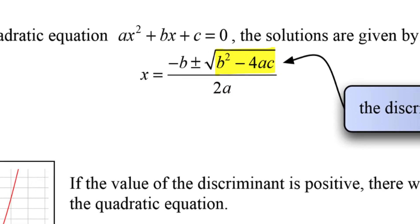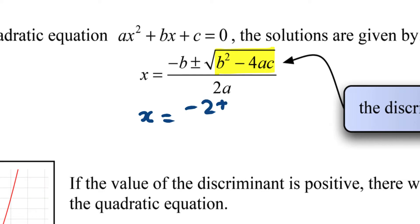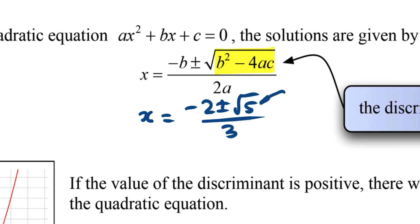Let's think about this. If we're solving a quadratic equation and we get the solution negative 2 plus or minus the square root of 5 over 3, for example, that has two solutions: negative 2 plus root 5 over 3, and negative 2 minus root 5 over 3. That 5 is the discriminant. Because it's positive, it's going to have two solutions.